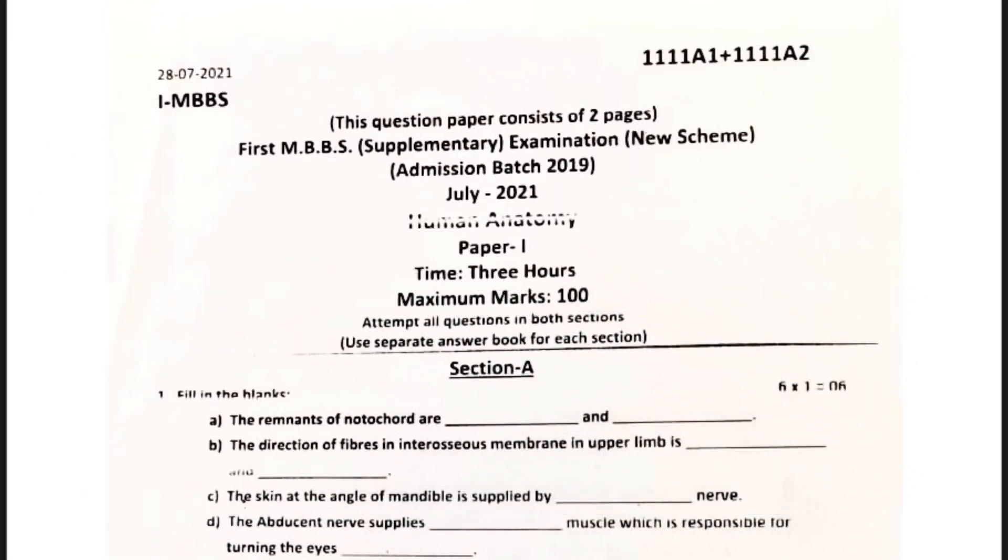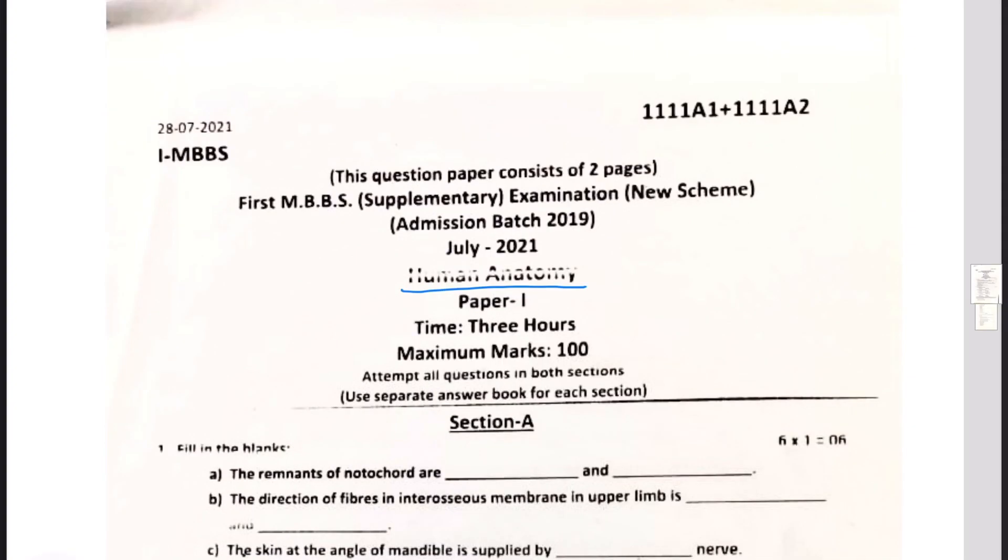Hello everybody, so I'm back here to RUHS, the same question paper. Remember I solved earlier, now this time it is a question paper of human anatomy for MBBS students admitted in 2019, but this one is now of a supplementary examination.